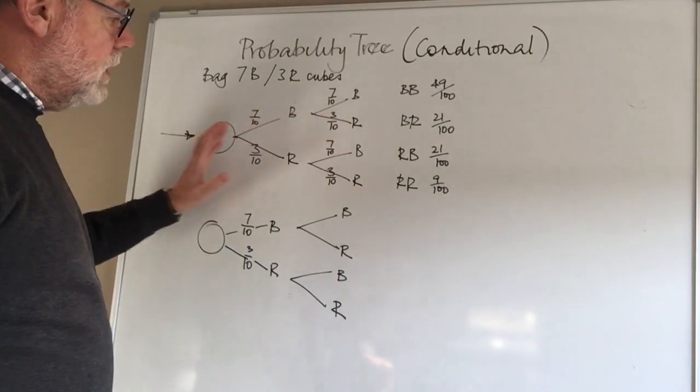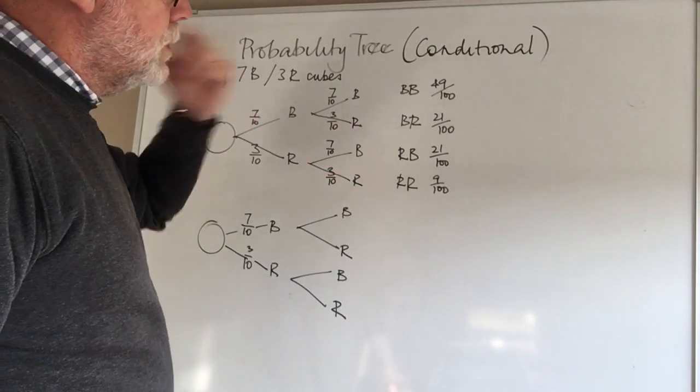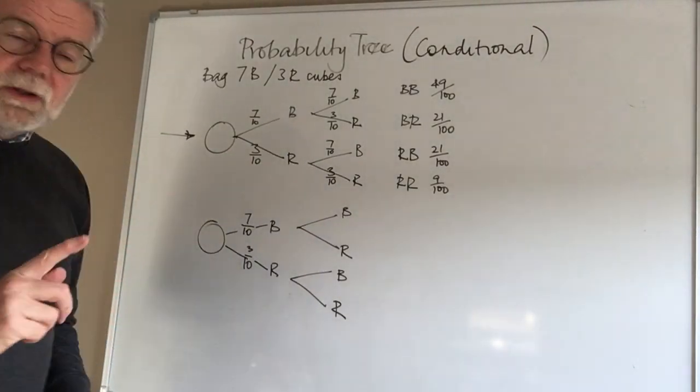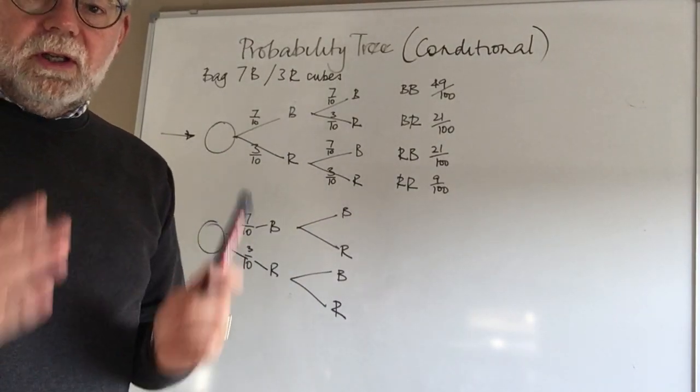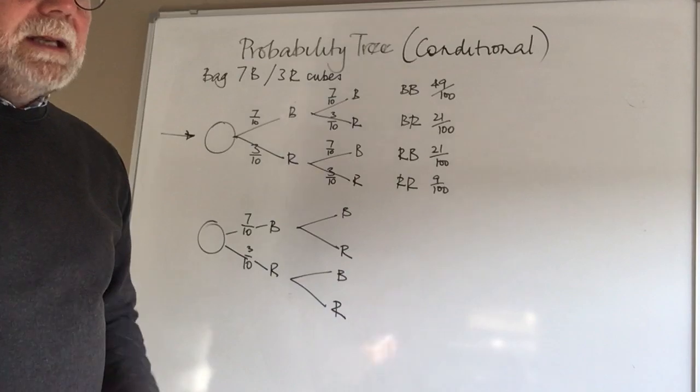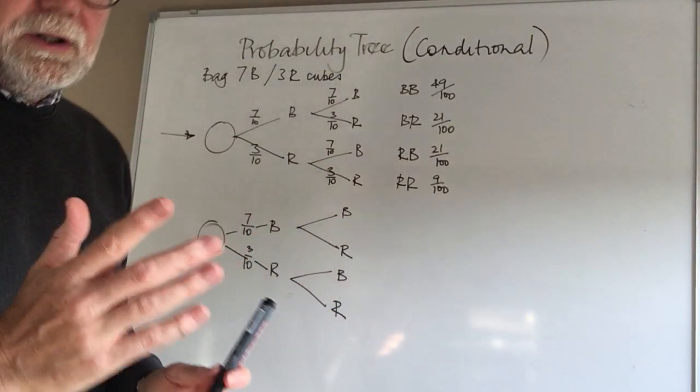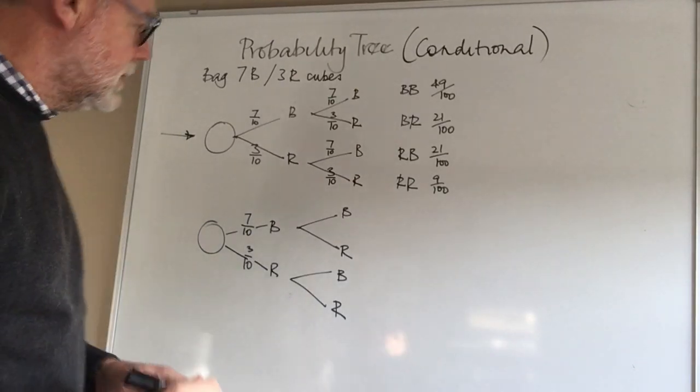And that's how it would look. If we worked our probability tree, those would be our outcomes, those are our probabilities. Now look what happens when we get to what's called conditional. Remember the phrase 'it's not replaced' or 'it's set aside.' Something like that is going to alert us that we've got a slightly different problem on our hands.